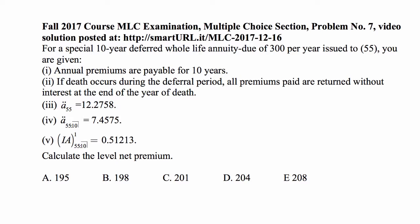For a special 10-year deferred whole life annuity due of 300 per year issued to a 55-year-old, the annual premiums are payable for 10 years during the deferral period. If death occurs during the deferral period, all premiums paid are returned without interest at the end of the year of death. A-double-dot-55 is 12.2758. A-double-dot-55-colon-angle-10 is 7.4575. IA-upper-one-55-colon-angle-10, the cost of increasing term life insurance for the first 10 years, is 0.51213 per unit.